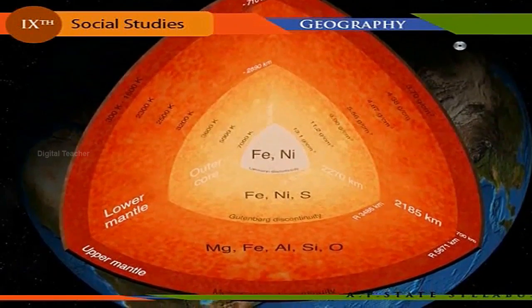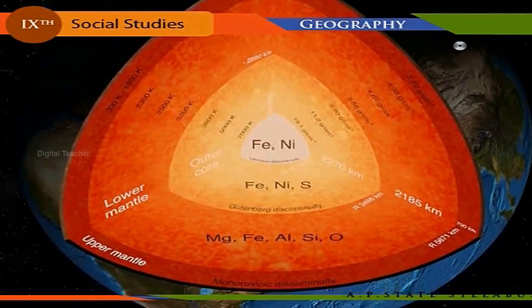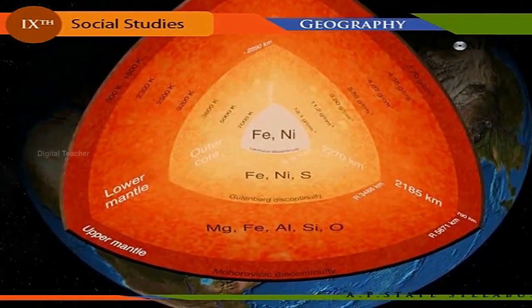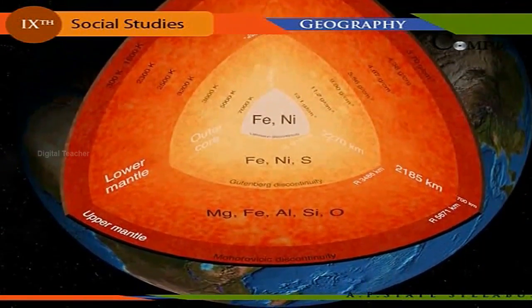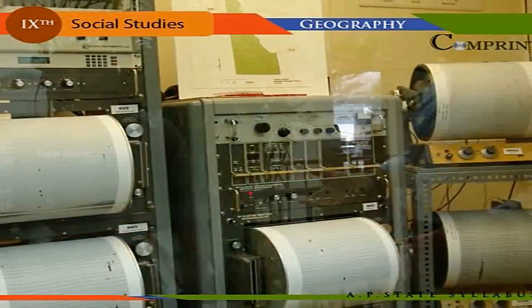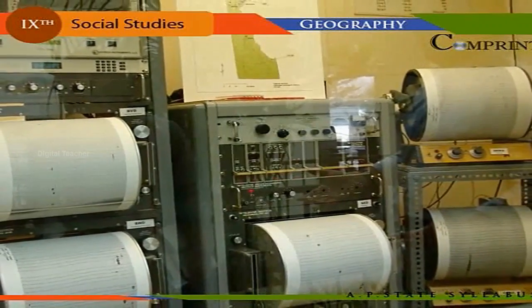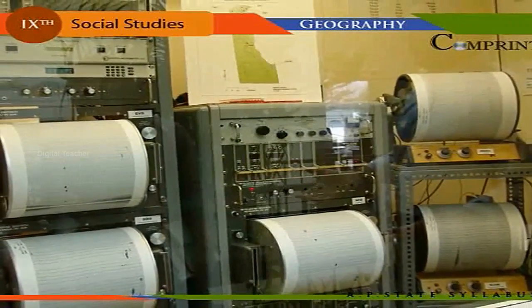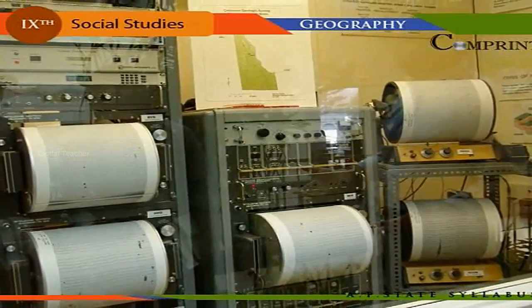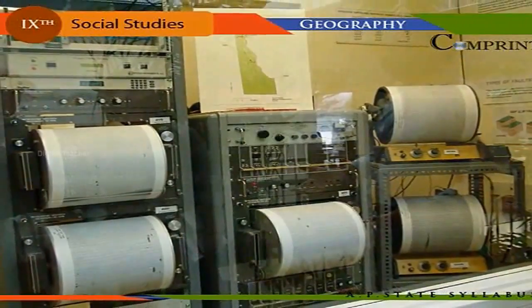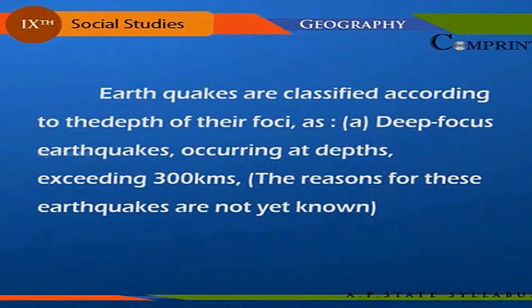This knowledge has helped scientists as indirect evidence to understand the internal structure of the Earth. The instrument used to detect and record seismic waves is called a seismograph, and the record it produces is called a seismogram. Earthquakes are classified according to the depth of their foci — deep focus earthquakes occur at depths exceeding 300 kilometers.